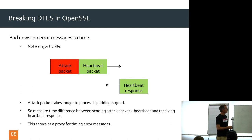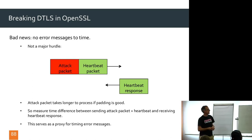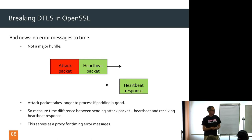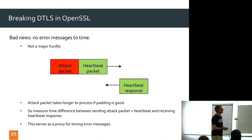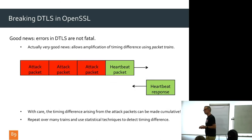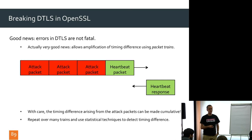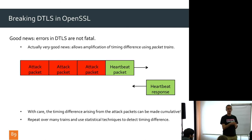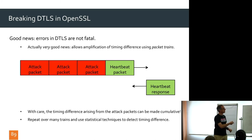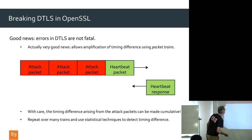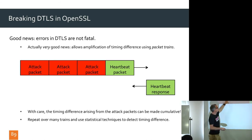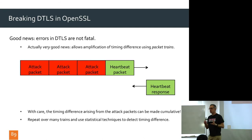At the time, heartbeat was only optional in DTLS, but OpenSSL had conveniently implemented it. We were the first people to use heartbeat to do something bad — I wish we'd read the source code more carefully; we might have found the heartbleed bug and saved the world some pain. We can amplify the timing by sending multiple identical attack packets in a train, making timing differences cumulative. This gets around the UDP packet size limit of roughly 1500 bytes.